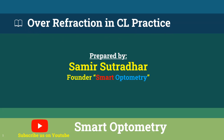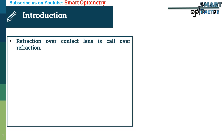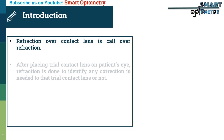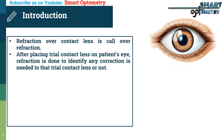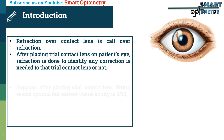Today I will discuss over-refraction in contact lens practice. Refraction over a contact lens is called over-refraction. After placing a trial contact lens on the patient's eye, refraction is done to identify if any correction is needed to the trial contact lens or not.